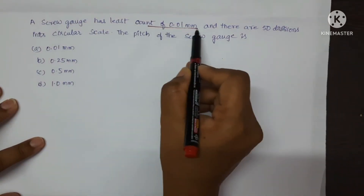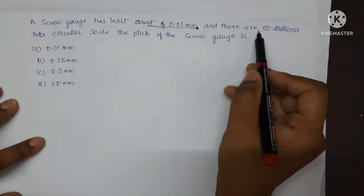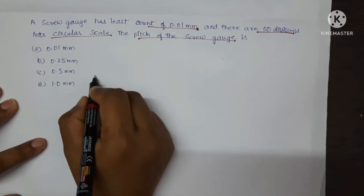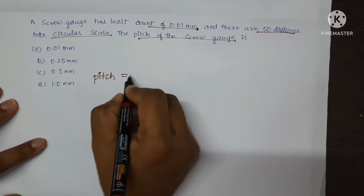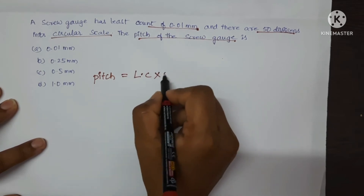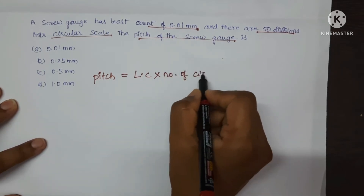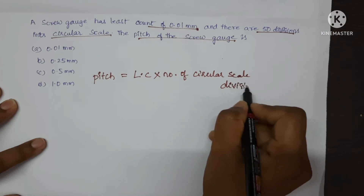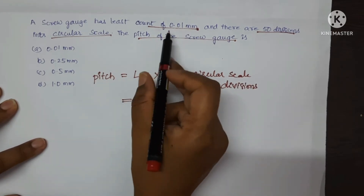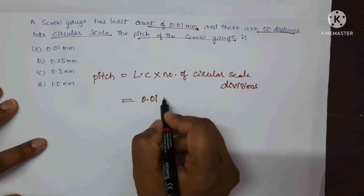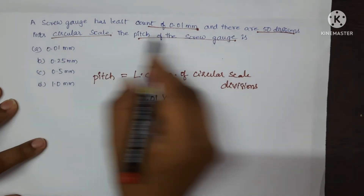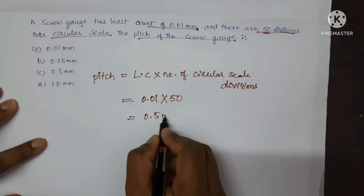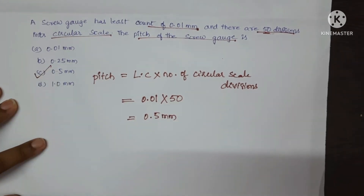Next question. A screw gauge has a least count of 0.01 millimeter and there are 50 divisions in its circular scale. Find the pitch of the screw gauge. The formula is: pitch equals least count multiplied by number of circular scale divisions, which equals 0.01 into 50, which equals 0.5 millimeter. C is the correct option.